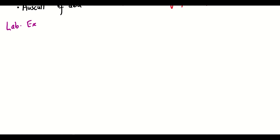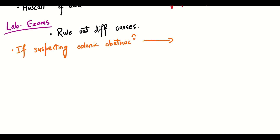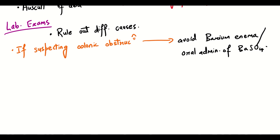Laboratory evaluations will help you rule out different causes based on urine analysis, enzyme levels, serum bilirubin levels, liver function tests, etc. And if suspecting colonic obstruction, one should avoid barium enema or oral administration of barium sulphate. Last of all, a CT scan will reveal the involvement of the pancreas, spleen or appendix and should be used for diagnostic purposes.